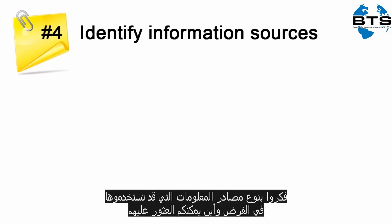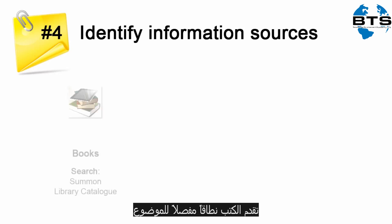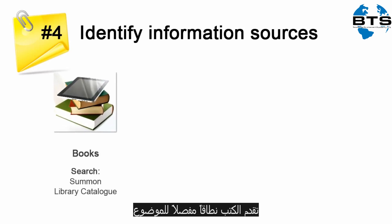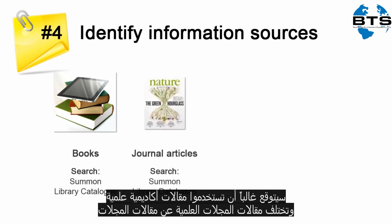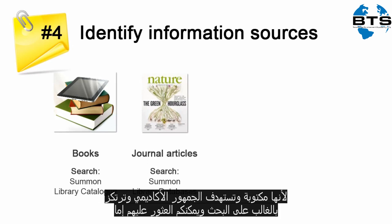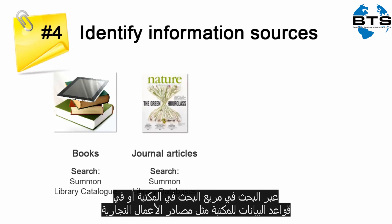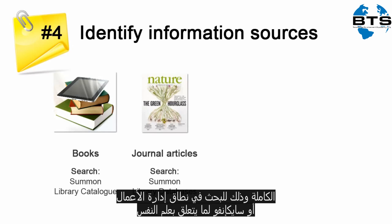Think about the types of information sources you might use for your assignment and where you'll find them. Books provide in-depth coverage of a subject — find these by searching Summon or the library catalogue. You will often be expected to use scholarly journal articles, which differ from magazine articles because they are written for an academic audience and are often based upon research. Find them by searching Summon or a library database like Business Source Complete for Business or PsycInfo for Psychology.